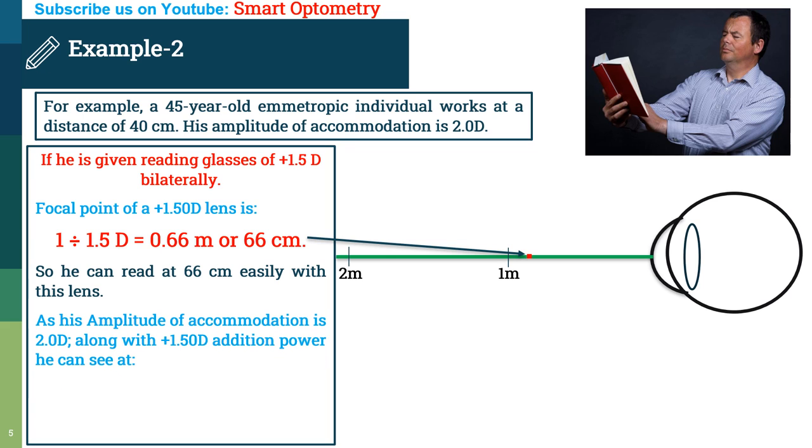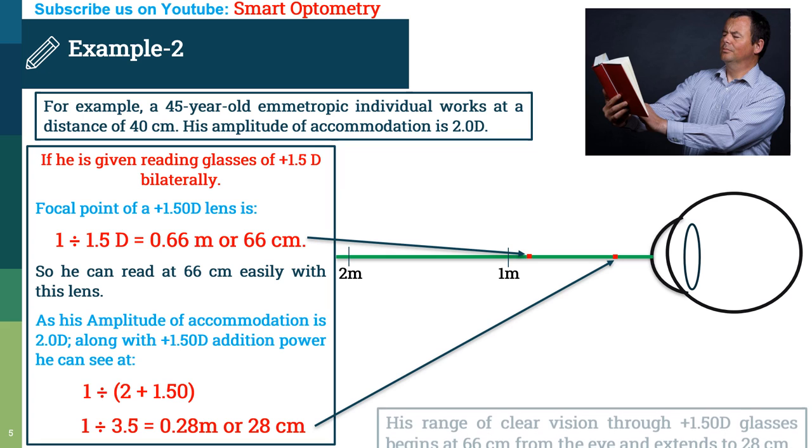Now, as his amplitude of accommodation is 2 diopter, so along with plus 1.5 diopter additional power lens, he can see at 1 divided by 2 plus 1.5. Here, 2 is amplitude of accommodation and 1.5 is addition lens power. Equal to 1 divided by 3.5 equal to 0.28 meter or 28 cm. So, he can read clearly at 28 cm also with the help of amplitude of accommodation and addition power 1.5 diopter.